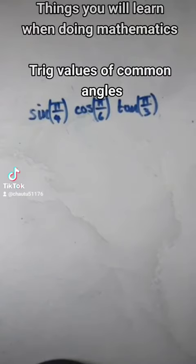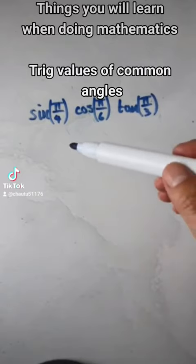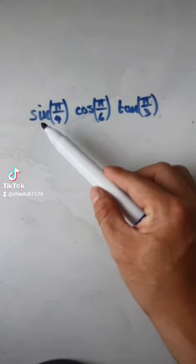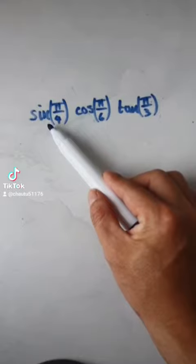Things you will learn when doing mathematics. Trig values of common angles. By the time you get to 15 or 16 years old, you're expected to memorize the values of all these common angles.